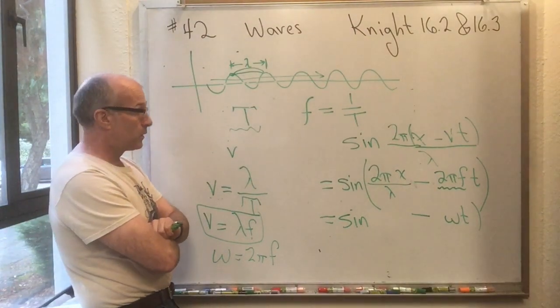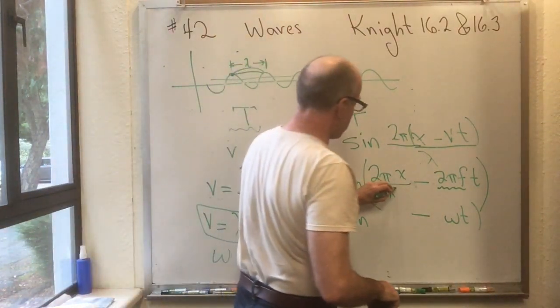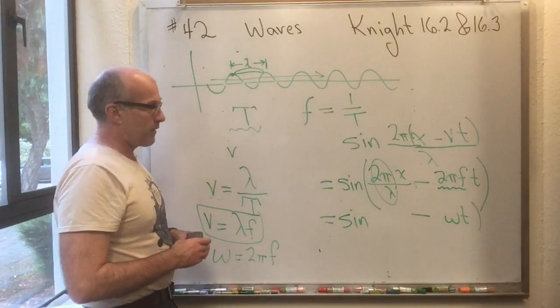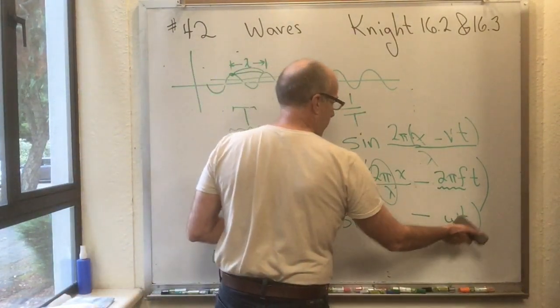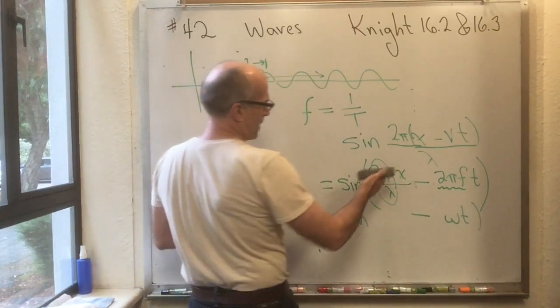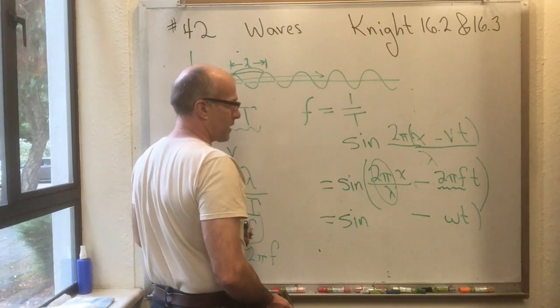Okay, and then we have one last thing to do. You see this combination here, 2 pi over lambda? Well, that's a bit annoying. If we've got this one all tidied up with omega T, and this one here is kind of messy, as 2 pi over lambda times X, we're going to find a new thing, which we're going to call K.